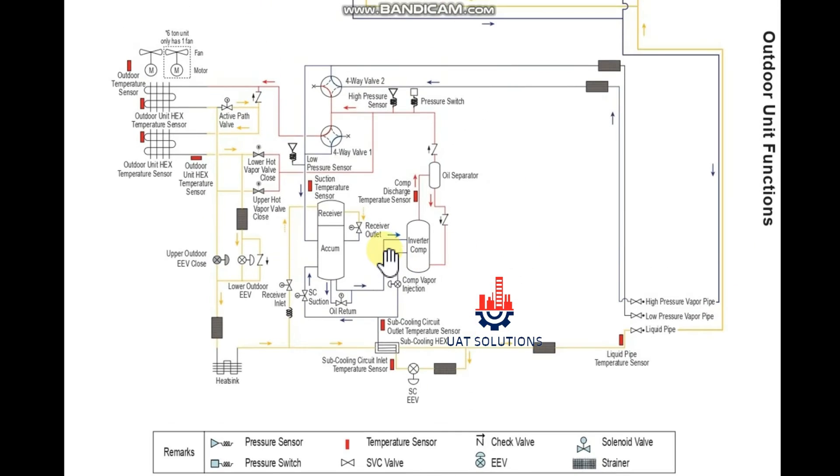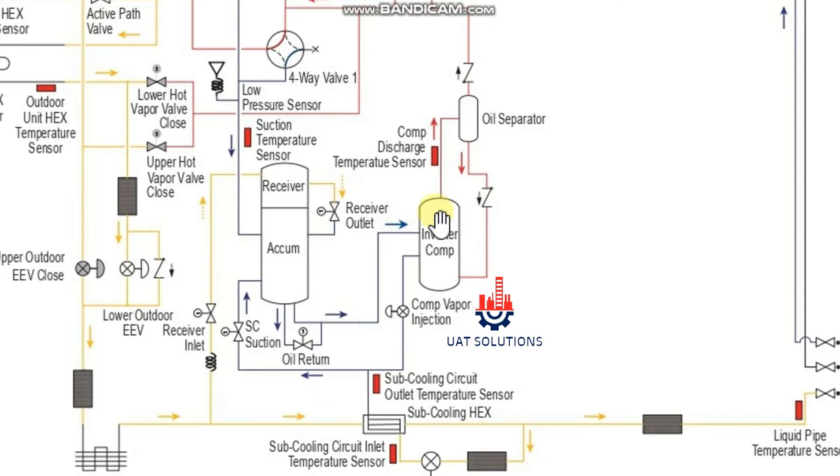Refrigerant enters the compressor at low pressure and discharges into the oil separator from top of the compressor with high pressure and temperature. Oil flows from the bottom of the separator back to the compressor due to oil particles being heavier than gas.